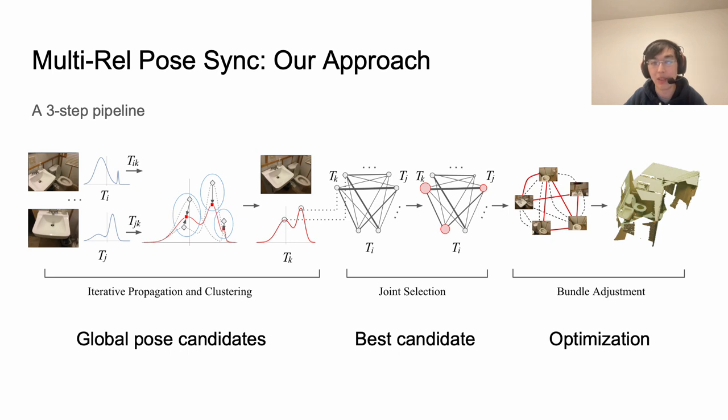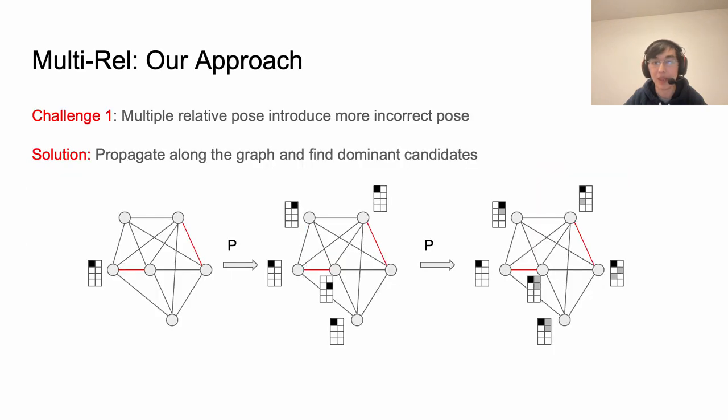After that we choose the best candidate among all the candidates. The final step is an optimization step which utilizes bundle adjustment to refine the selected candidates. The propagation and clustering step collects information for each vertex from the neighborhood and then finds all possible candidates. We see from this figure that starting from a certain vertex of the graph we can vote for the candidate poses of its neighbors by applying transformations on the edges iteratively. This procedure collects pose candidates through all possible paths on the graph. After iterations we can find the optimal global pose via dominant candidates.